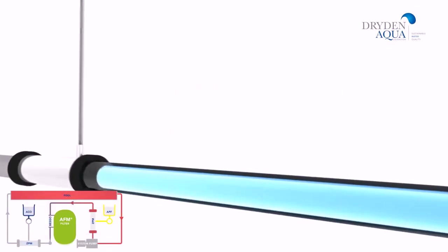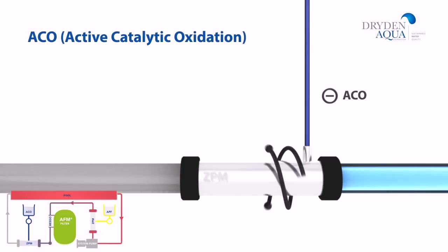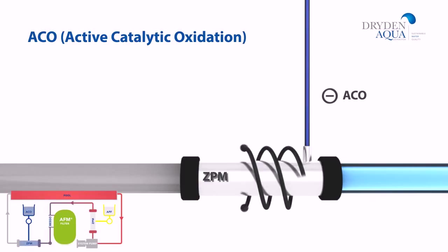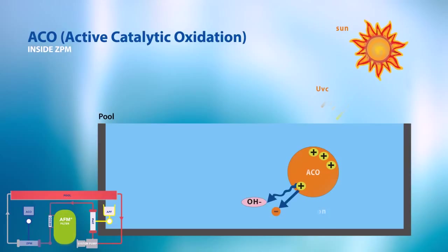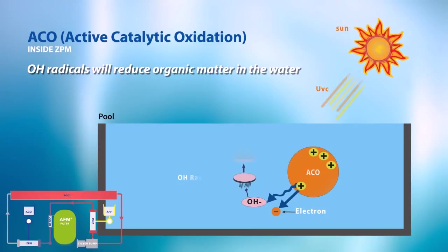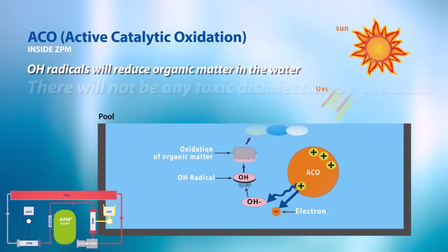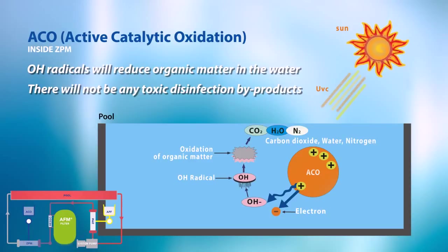ACO protects the chlorine against photoreduction from the sun so that less chlorine is needed. ACO, in combination with sunlight, generates hydroxyl radicals that have a very high oxidation potential. The radicals will consume organic matter in the water without forming any dangerous disinfection by-products.